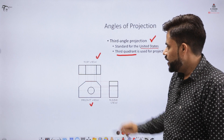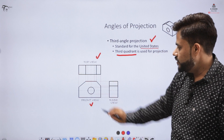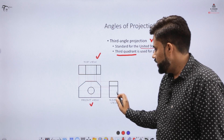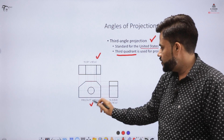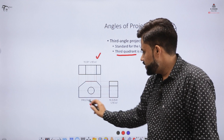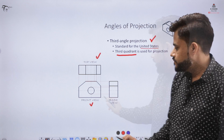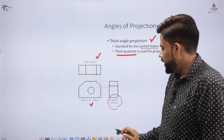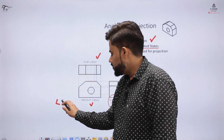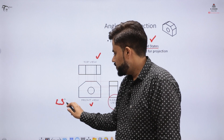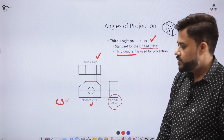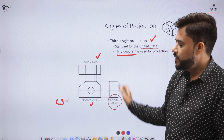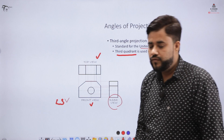Similarly, in the third angle projection, the side views appear on the adjacent part of the front view. The right side view appears on the right and the left side view appears on the left of the front view. This is the general nomenclature that we follow.